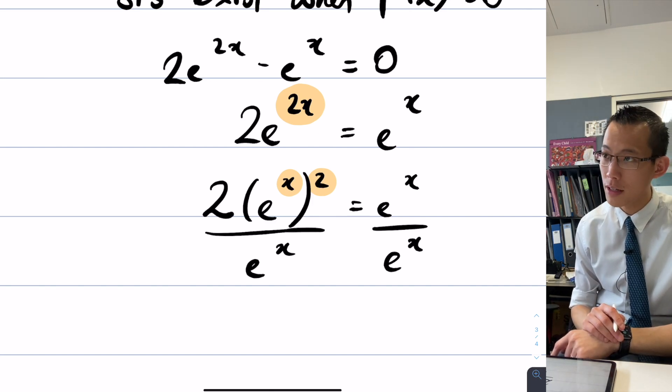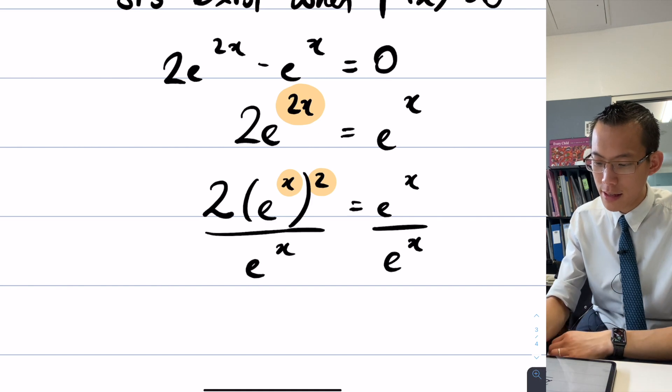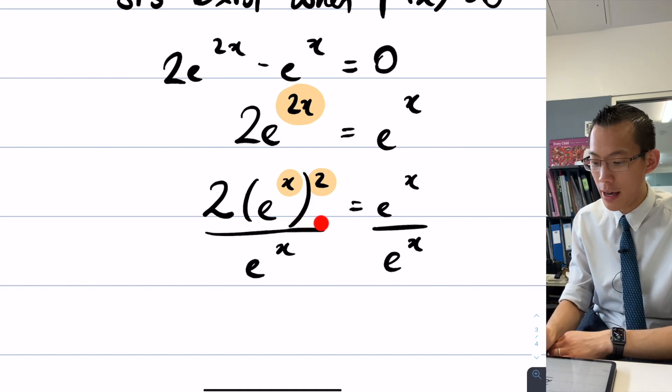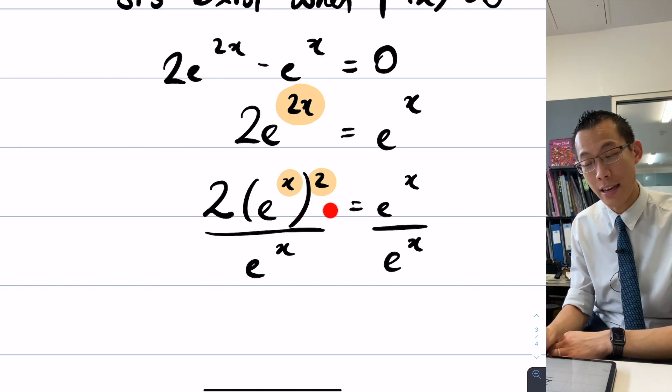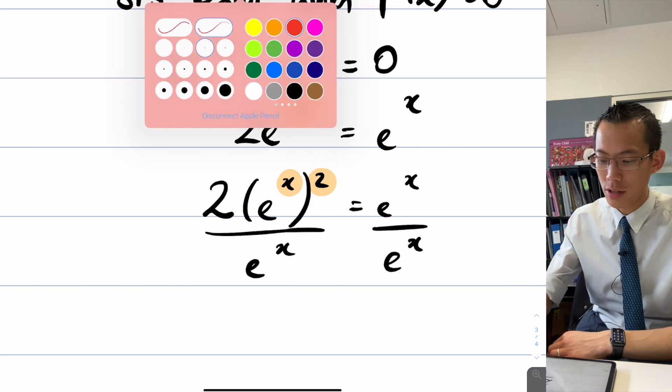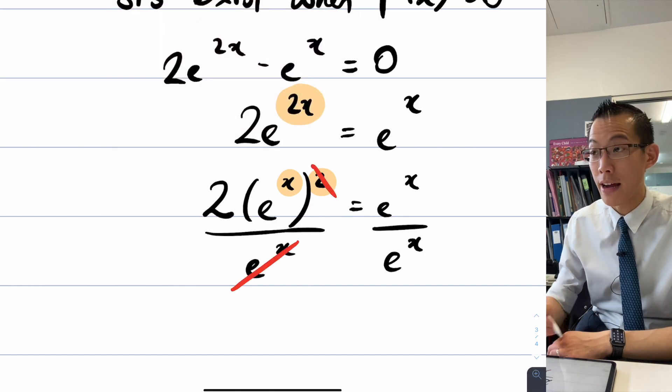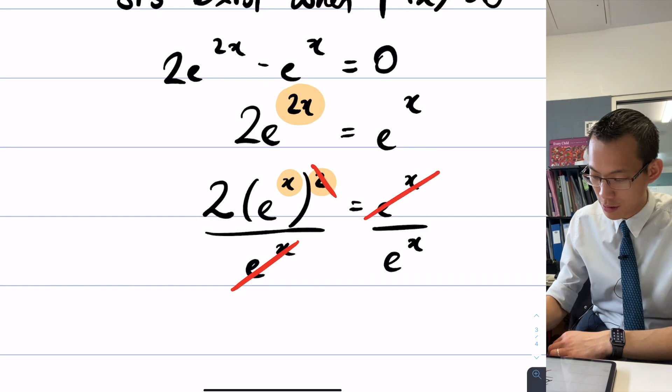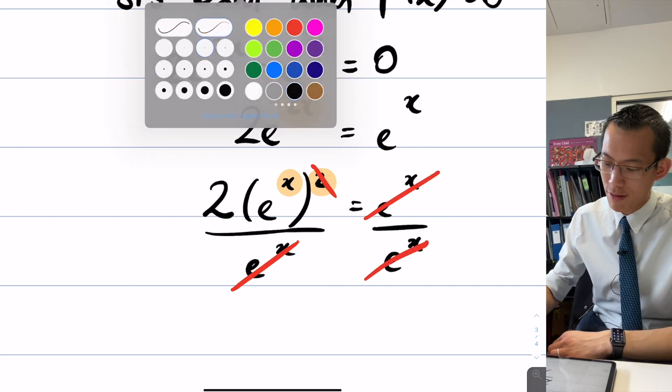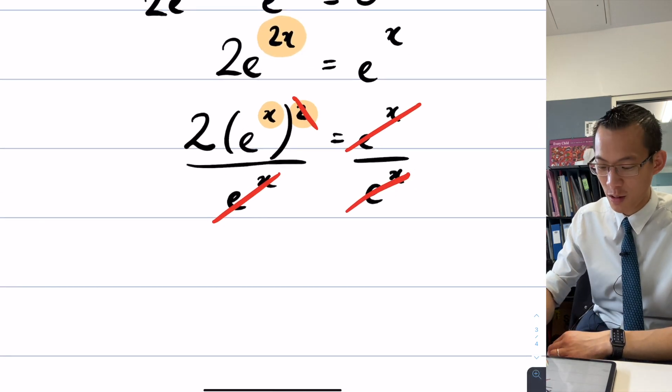Oh my God. I just divide both sides. Exactly. See this, this (e^x)^2 up here is just e^x times e^x. So therefore one of them is going to just cancel. And then of course on the right hand side, you cancel, you just get one. That's perfect. So I told you it was easier than it looks.